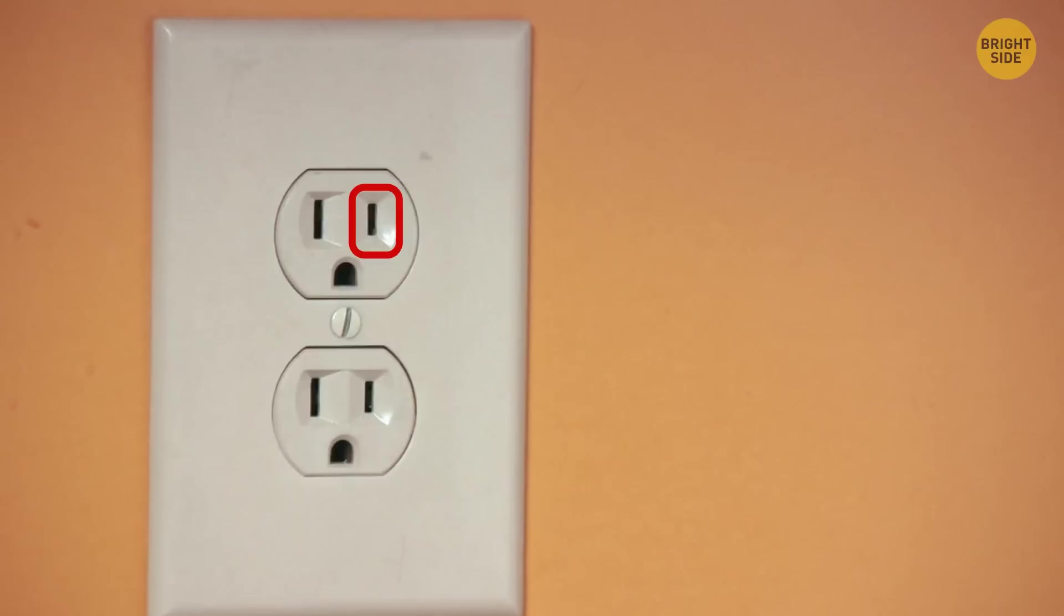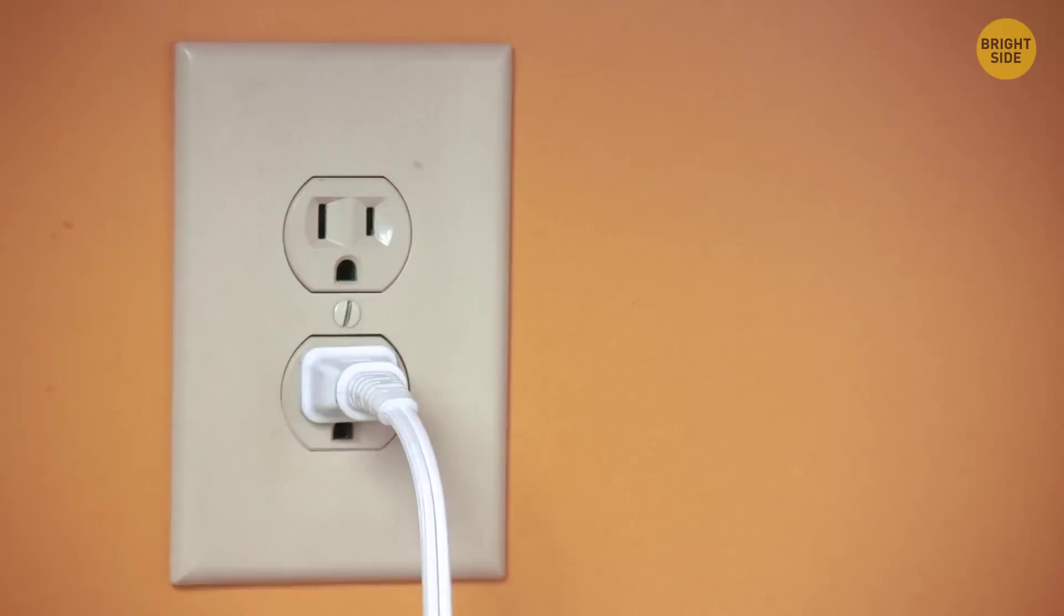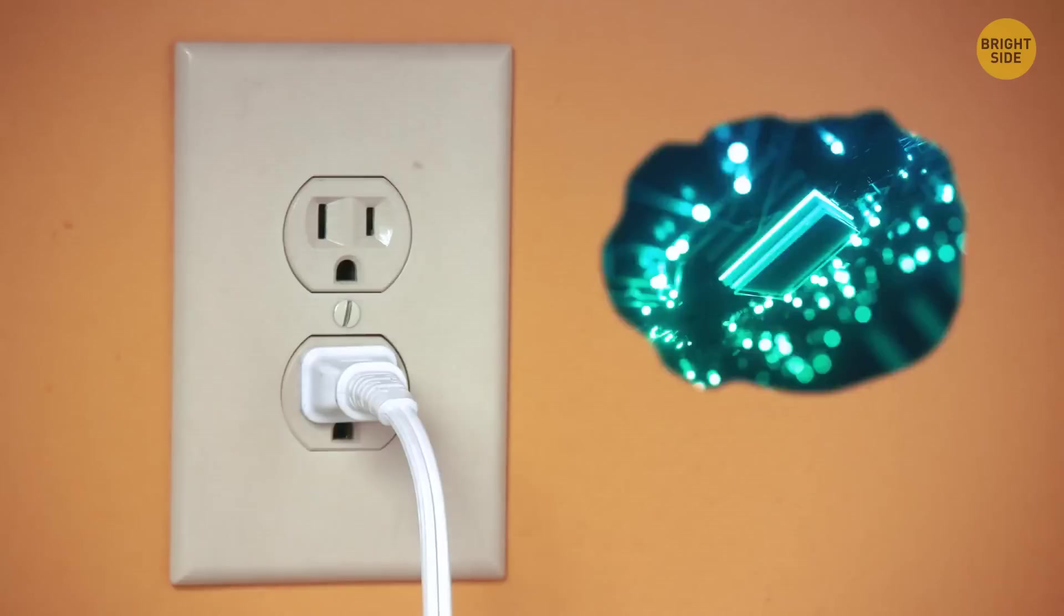Why are there two holes in the socket? The left hole is neutral, the right hole is not, and the gap underneath is ground. Electricity needs to flow through the chain. The current flows from the hot slot, passes through your phone charger, for example, and then goes through the neutral hole.